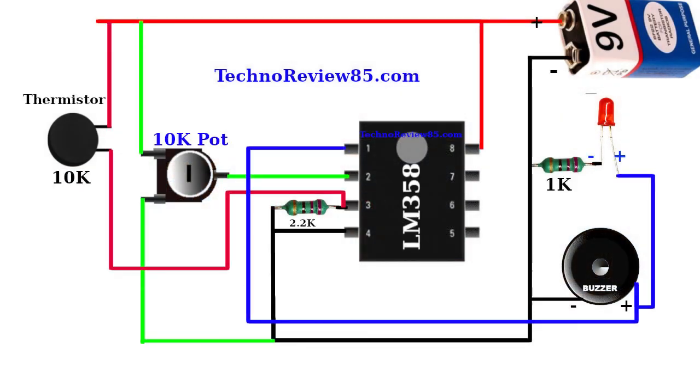Here is the connection diagram. This diagram is designed with practical parts so you can easily understand. IC pin 8 is connected to 9 volt battery positive and pin 4 is connected to 9 volt negative.